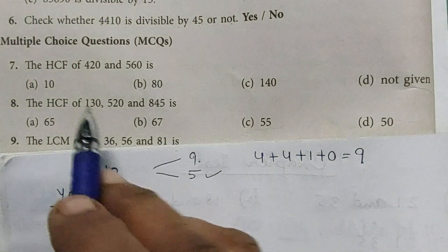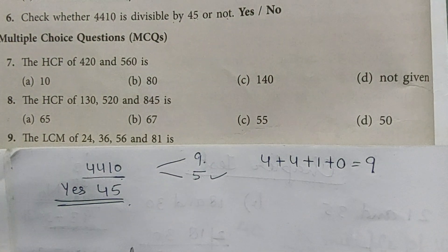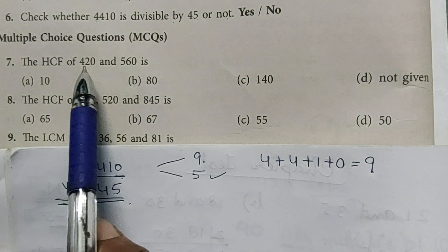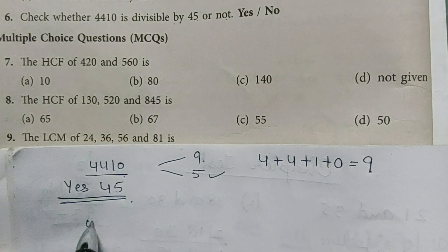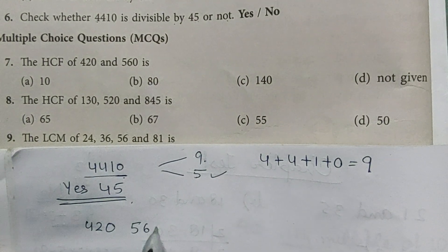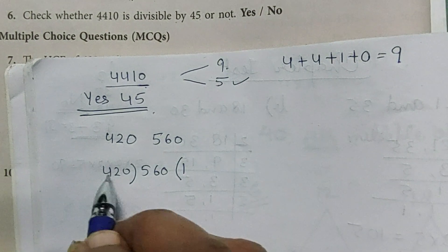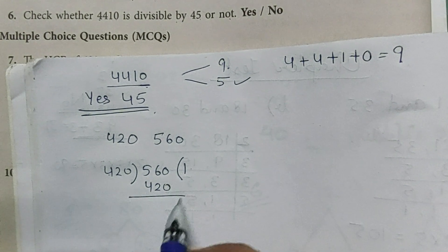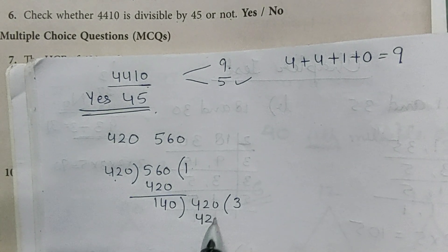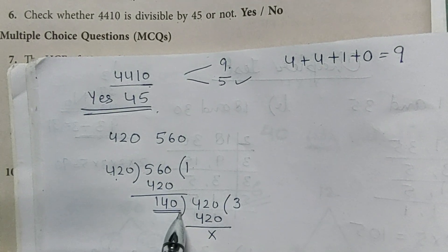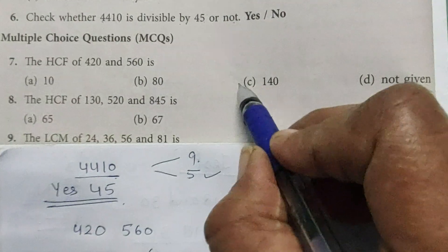Question number 7: find the HCF of 420 and 560. Since these are large numbers, we use the division method — divide the larger number by the smaller one. 560 ÷ 420 gives remainder 140. Now 420 ÷ 140 gives remainder 0. The last divisor is 140, so the HCF is 140. Option C is the correct answer.